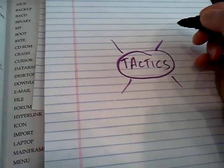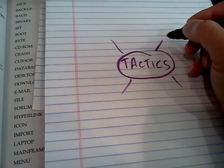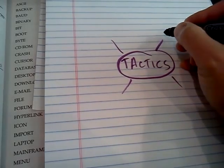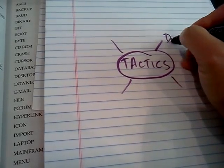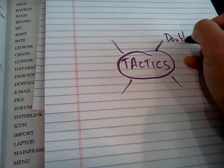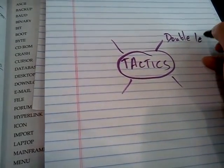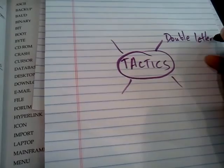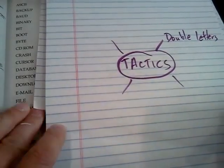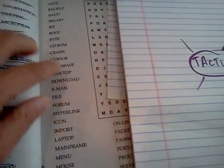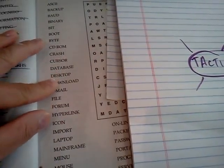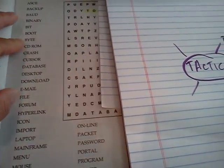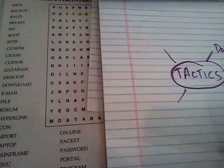So for tactics, what I'll discuss is double letters. If you find a double letter, then that's a good thing. It's easy to find — those are the easiest to find.